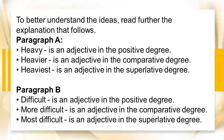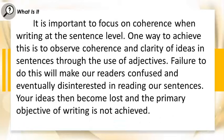To better understand the ideas, read further the explanation that follows. Paragraph A: Heavy is an adjective in the positive degree. Heavier is an adjective in the comparative degree. Heaviest is an adjective in the superlative degree. Paragraph B: Difficult is an adjective in the positive degree. More difficult is an adjective in the comparative degree. Most difficult is an adjective in the superlative degree. It is important to focus on coherence when writing at the sentence level. One way to achieve this is to observe coherence and clarity of ideas through the use of adjectives. Failure to do this will make our readers confused and eventually disinterested in reading our sentences.